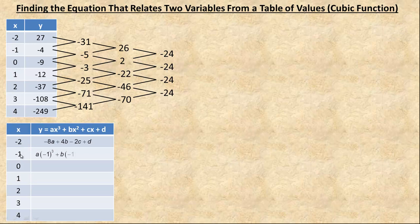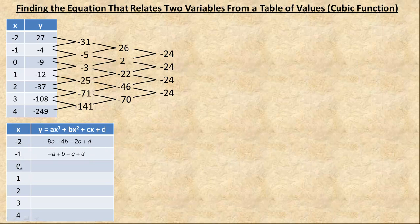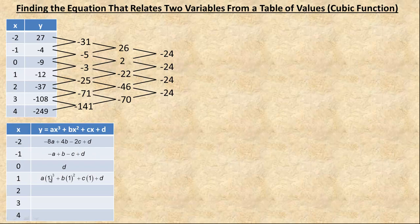Then we put negative 1 in place of x. Negative 1 cubed is negative 1 so this would be negative a. Negative 1 squared is positive 1 so it would be plus b. And negative 1 times c would be negative c. If we put 0 in, 0 cubed, 0 squared, and anything times 0 is 0, so we are just left with d for that y value. If we put 1 in — a very similar calculation except all the powers are going to be positive — so you just get rid of the negative signs and it is a plus b plus c plus d. And similar with the 2 — very similar except there won't be any negatives.